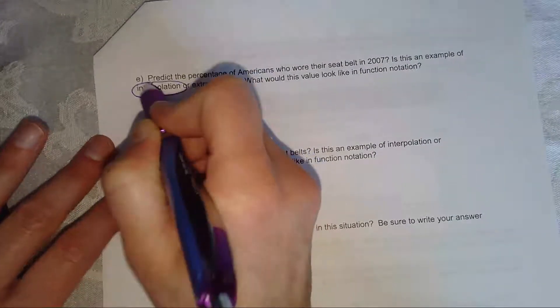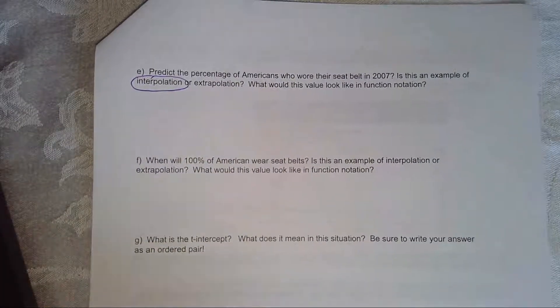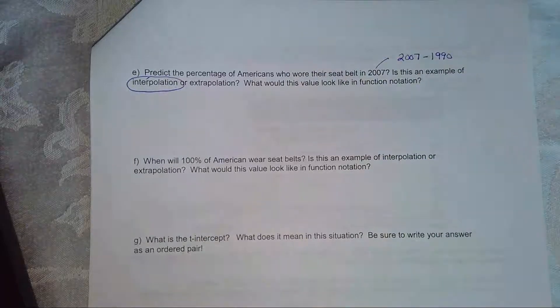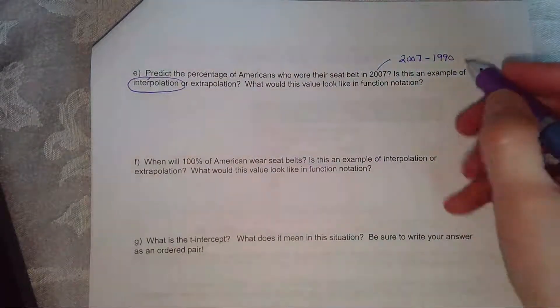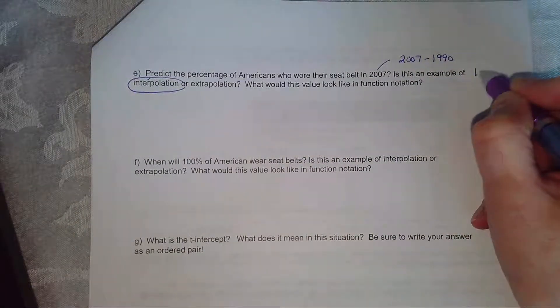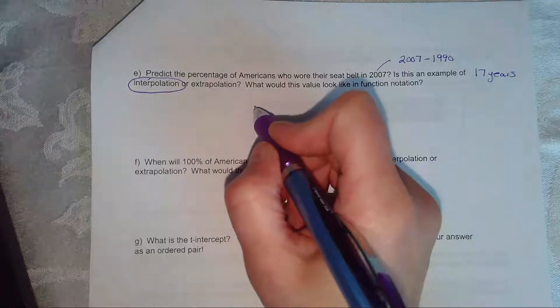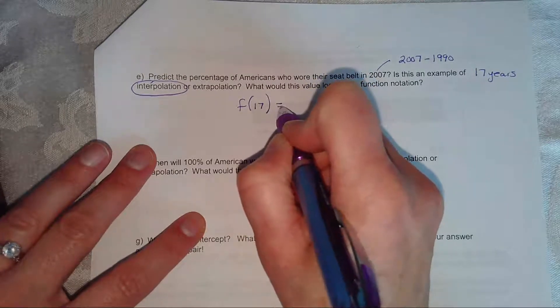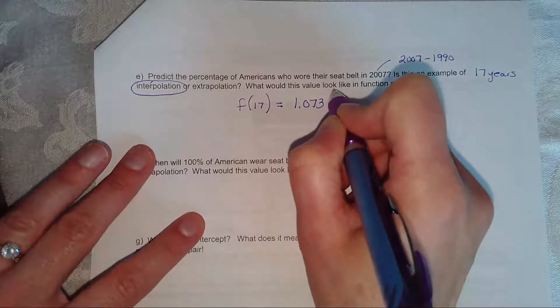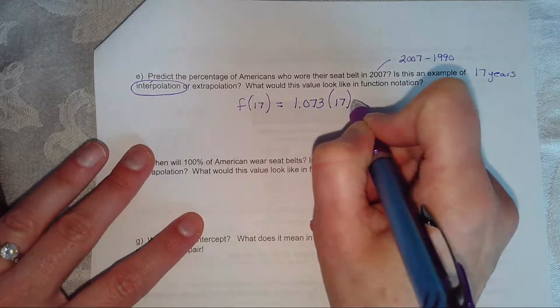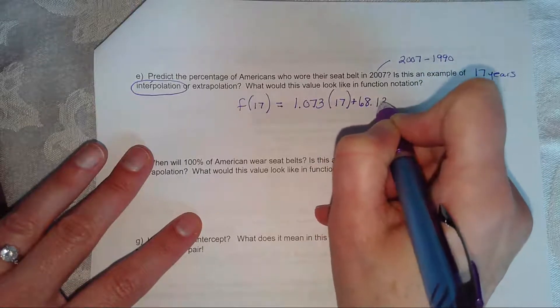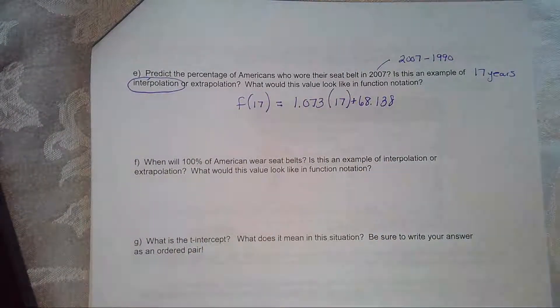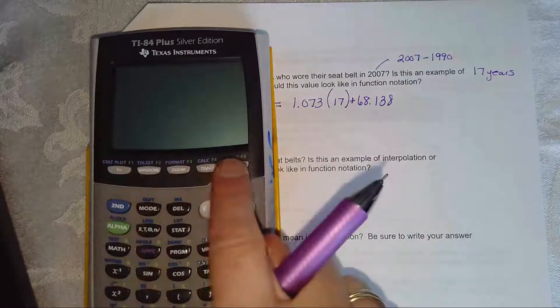So if they want to know the percent of Americans who wore seat belts in 2007, well, that is within the bounds of my data. You see that would fall between 2004 and 2008. So that's going to be interpolation. So let's figure out the t-value. So this t-value is going to be 2007 minus 1990. So how many years has gone by since 1990? So it looks like we're going to have 17 years. So here's my formula.